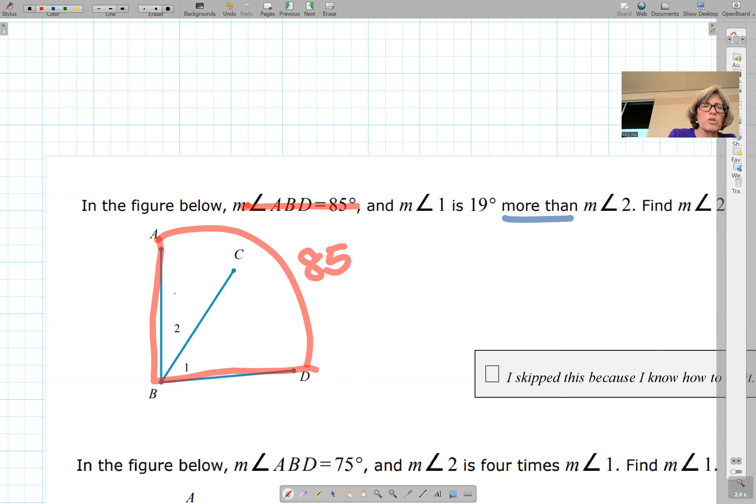So 2 is going to be your x. 19 more than x. More than is a concept of addition. If I said I was 19 years older than you, that would be a plus concept. So our expression is going to be 19 plus x.